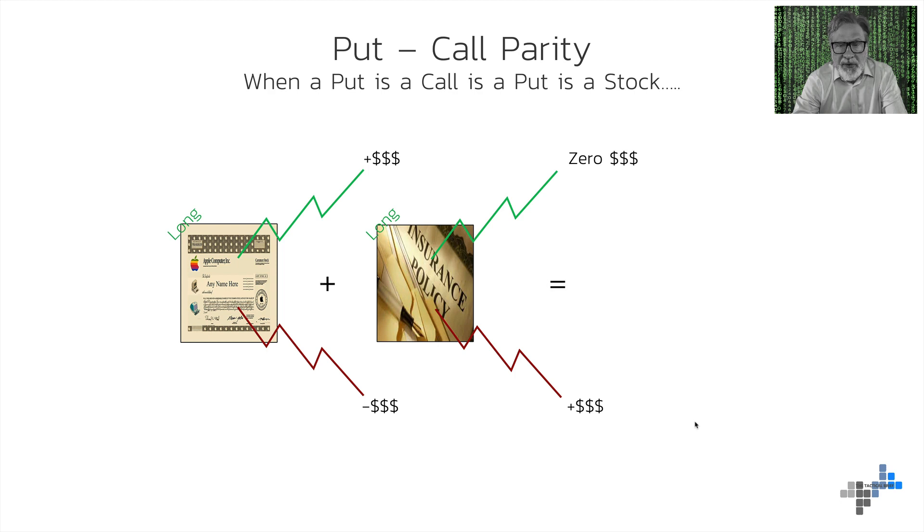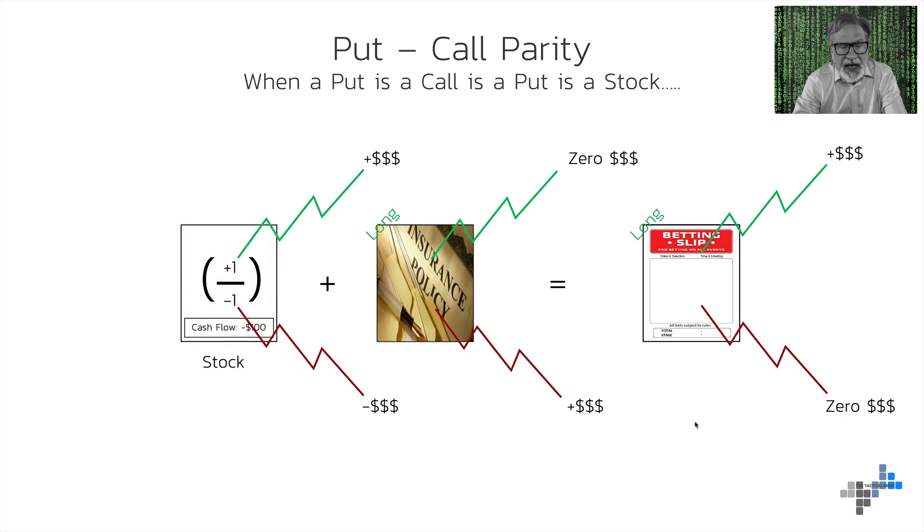Excellent. So if I have these two products together, I have the stock and I have the insurance policy. What does that give me? Actually, it looks very much like a betting slip. Why is that? If the market goes up, I'll make money. If the market goes down, I don't lose any money. Yes, I've paid an insurance premium on the policy earlier. But if the market goes to zero, I only lose my premium and I get compensated for the loss in the share price I have. How does that look? That looks very much like a call option. And let me explain you why.